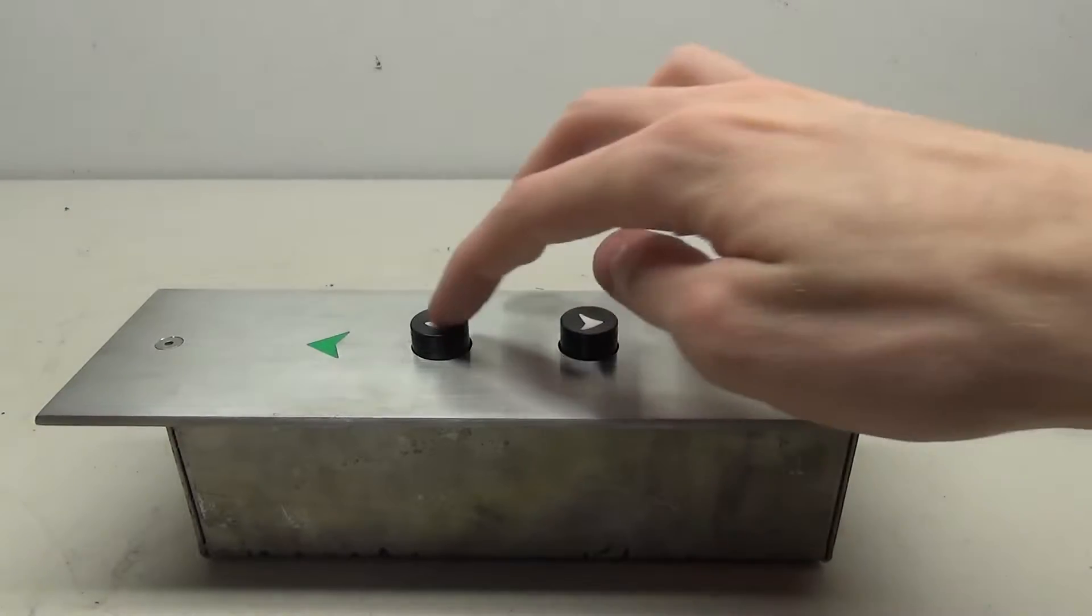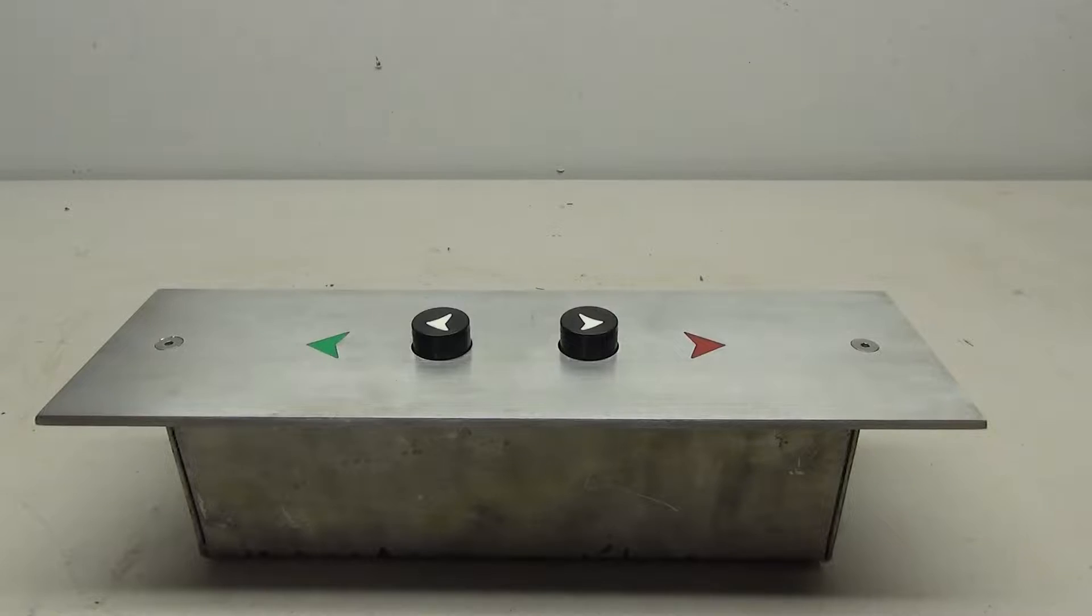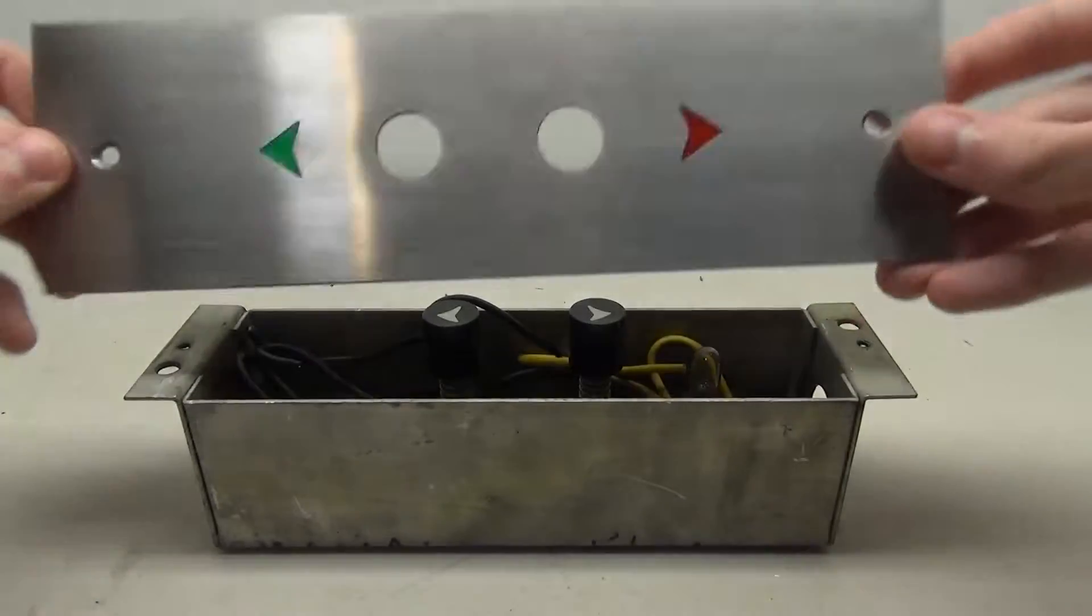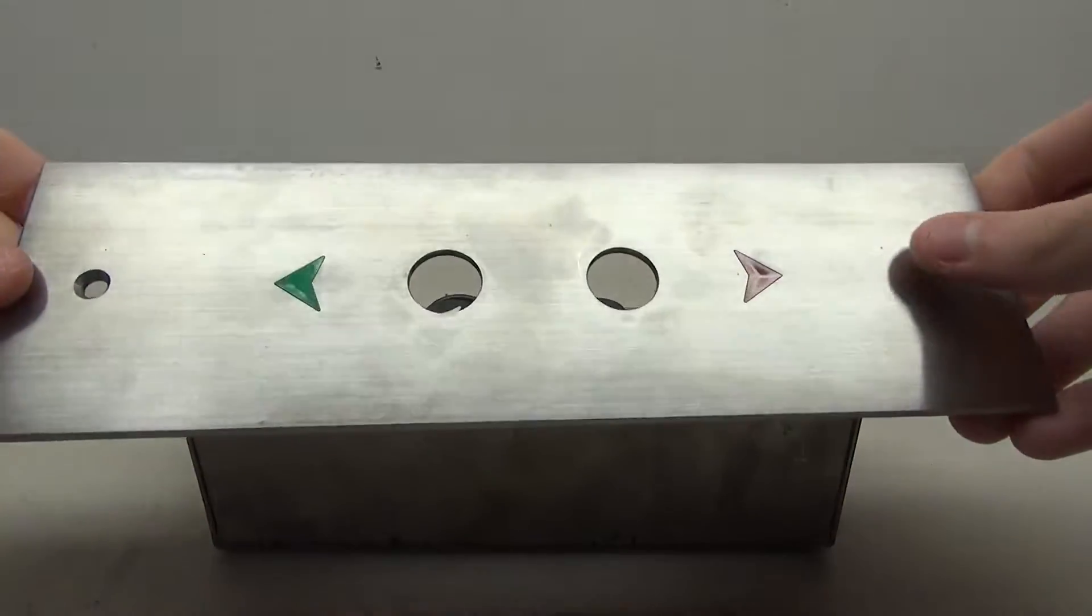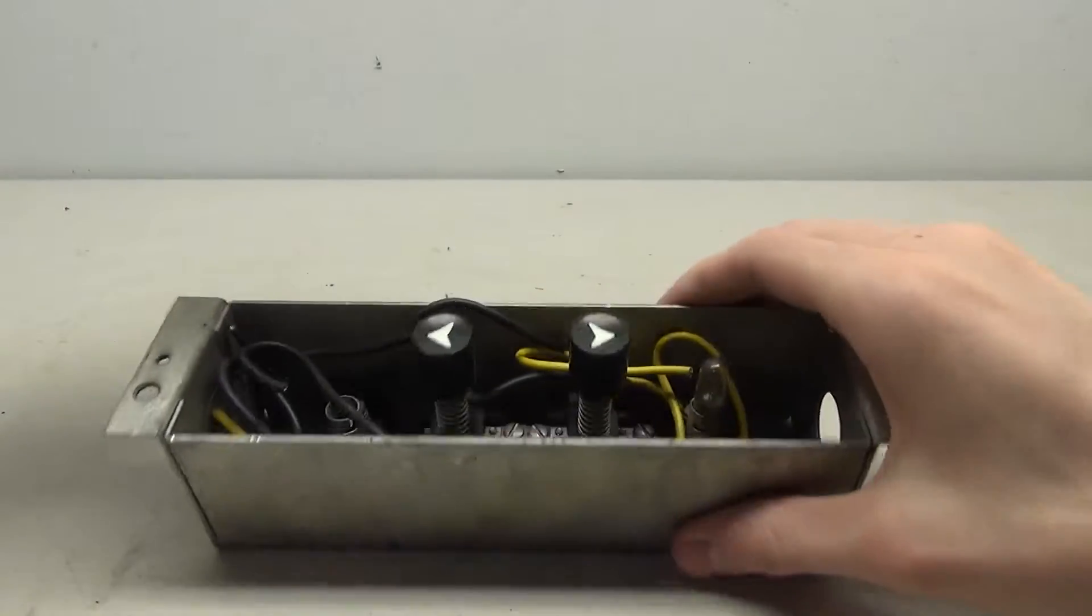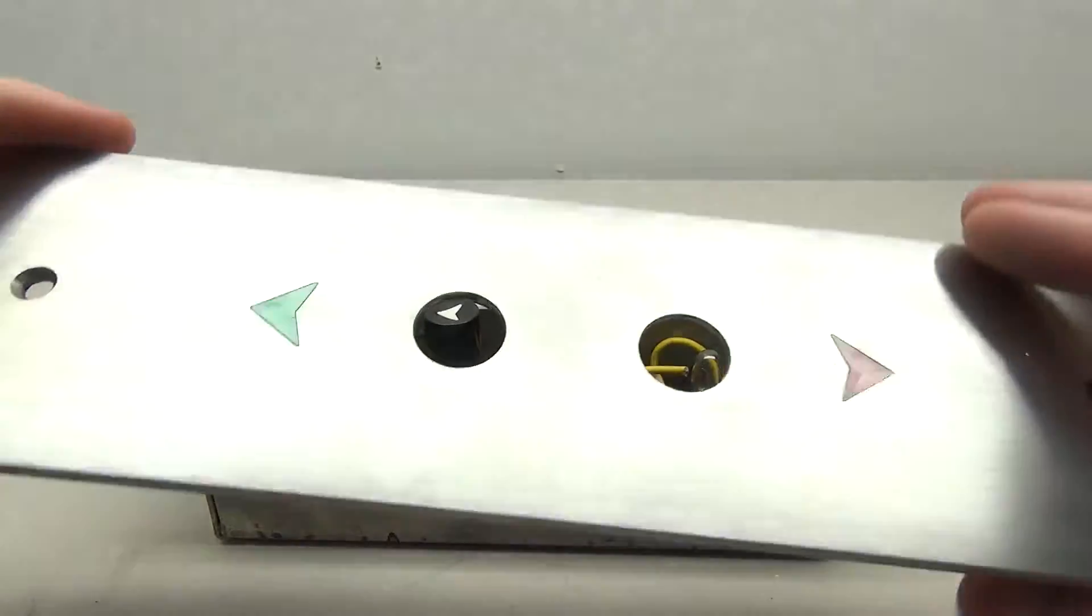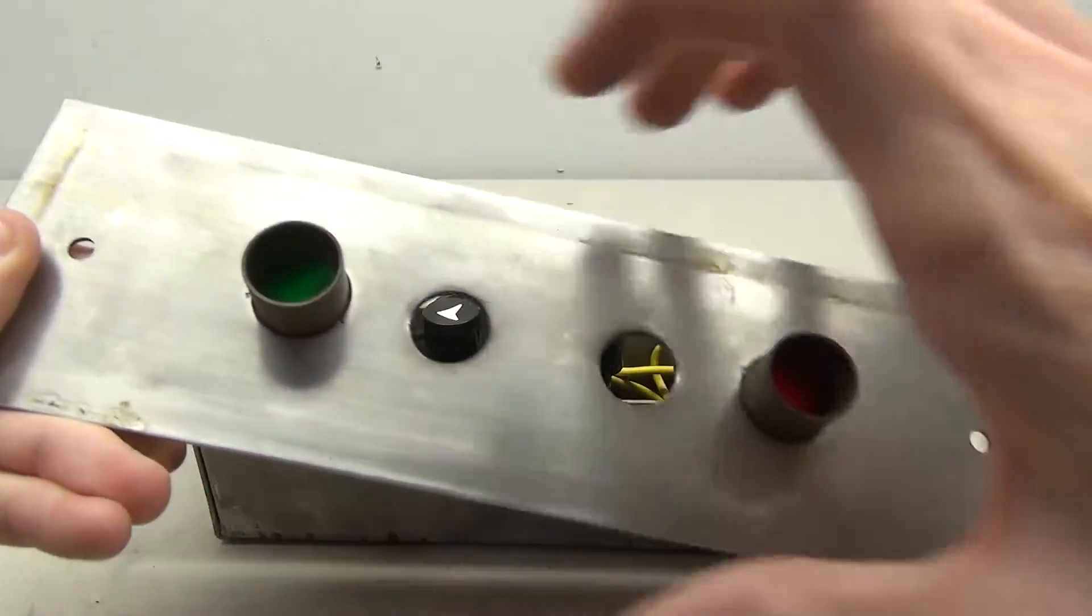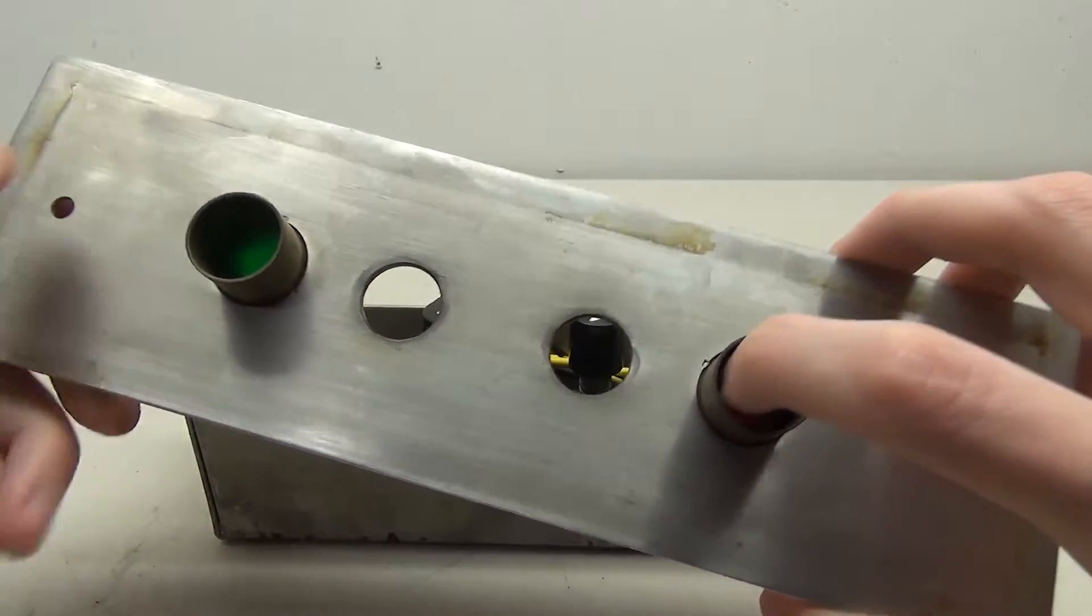So one thing to note is these buttons are back mounted, so the plate itself does not have the buttons connected to them. They're connected to the box. Taking a closer look at the plate, there's not really a whole lot to see. There are these little metal rings which keep the light only on the specific part, so in this case the arrows.